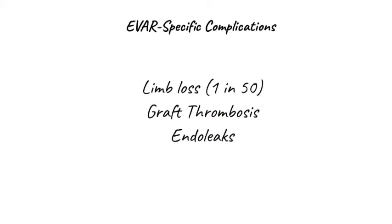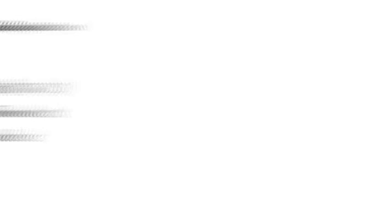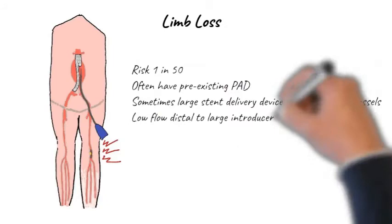Then we have the EVAR-specific complications. These include limb loss at a risk of about 1 in 50, graft thrombosis, and endoleaks, which cause more confusion than anything else. These patients often have pre-existing peripheral arterial disease. Sometimes large stent delivery devices can damage the access vessels. Alternatively, low flow distal to the large introducers can cause thrombosis in situ in pre-existing PAD segments.